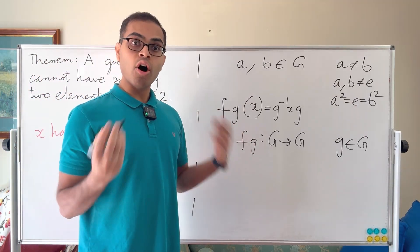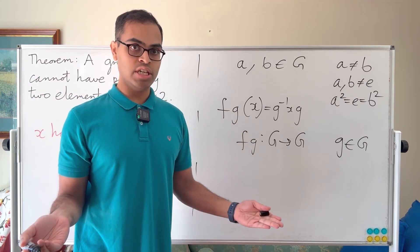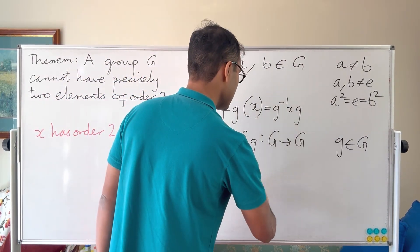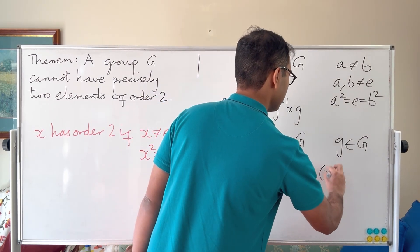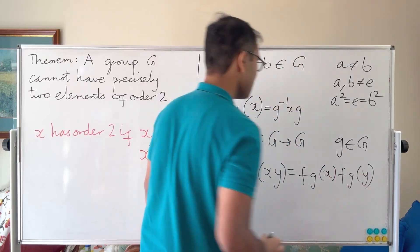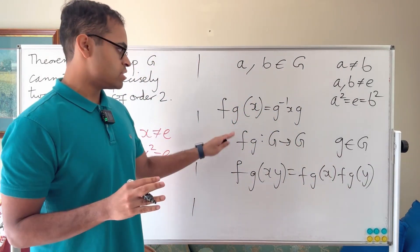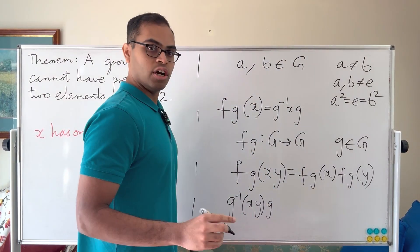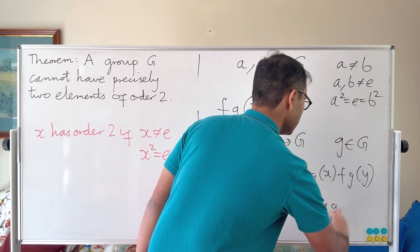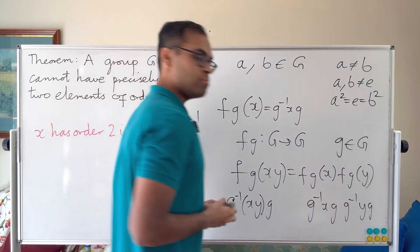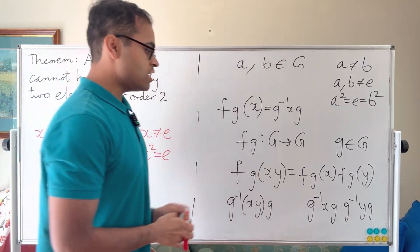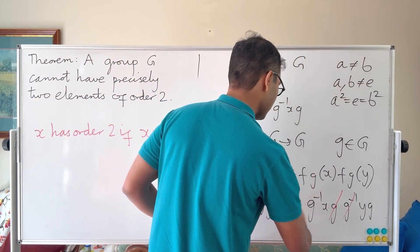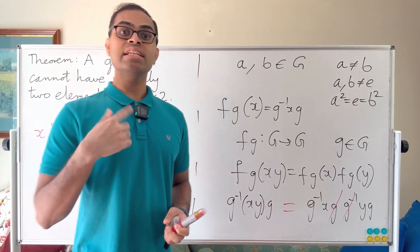This is called an automorphism because it is an isomorphism from G to itself — in particular, a homomorphism. That means f_g(xy) = f_g(x) · f_g(y). The left-hand side is g⁻¹xyg, and the right-hand side is g⁻¹xg · g⁻¹yg. Notice that the middle g and g⁻¹ cancel, giving g⁻¹xyg — which equals the left-hand side. So the group law is preserved.